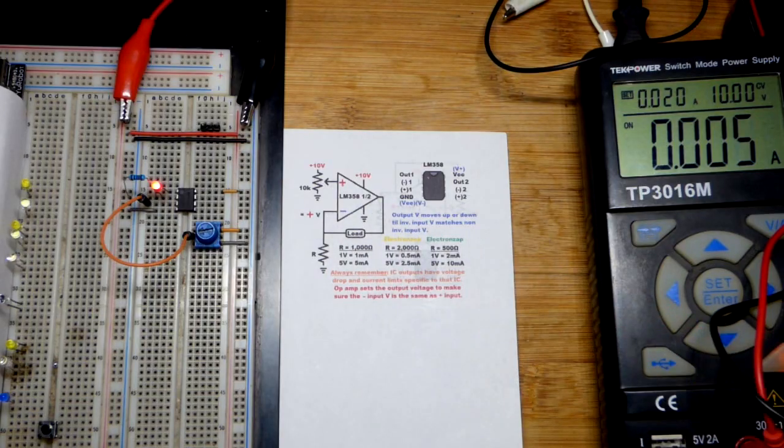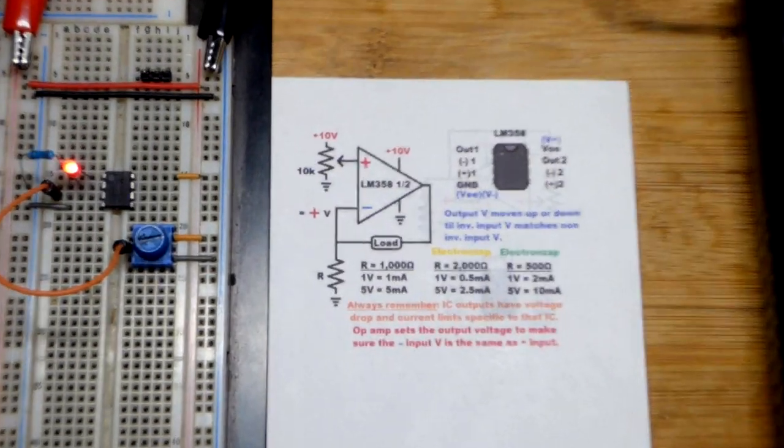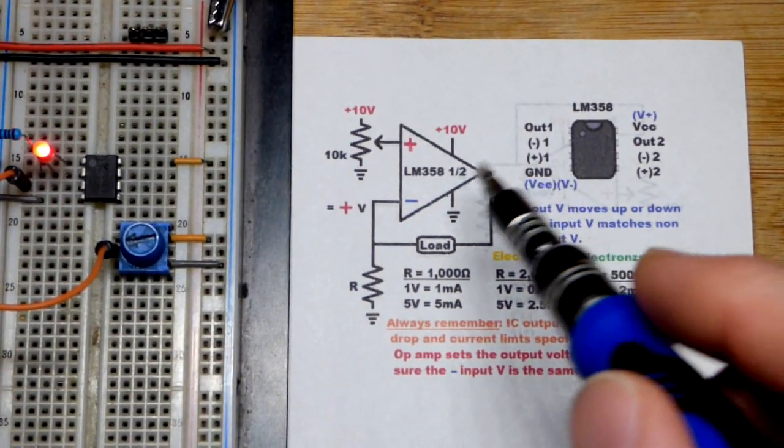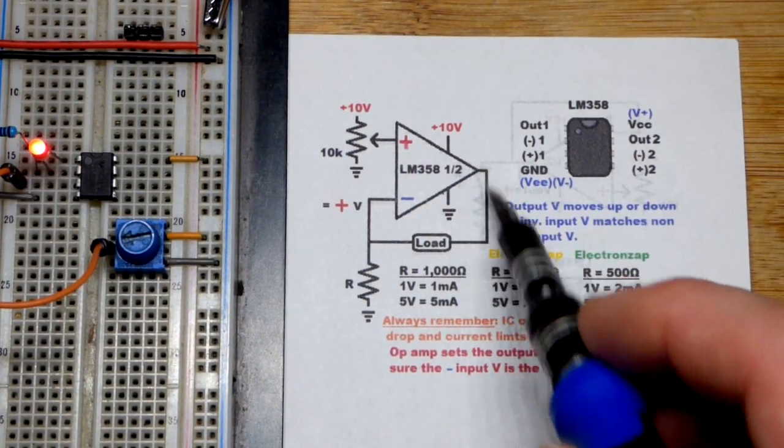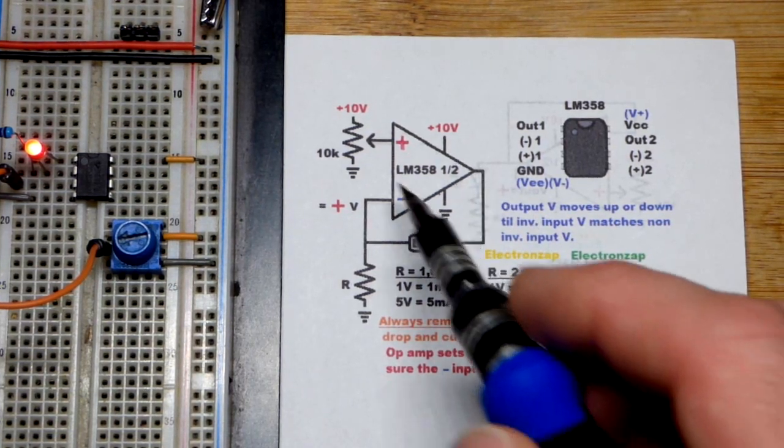Here's the schematic diagram I drew for the op-amp used as a current source. Remember, the LM358 cannot provide the full positive supply voltage; it usually falls a couple of volts short, so we're limited to about 8 volts out.